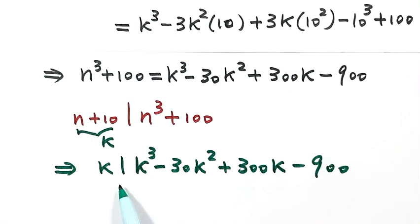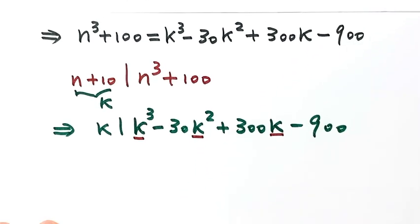Because k divides this whole thing, look at the first three terms. The first three terms each has a k as a factor, so the first three terms are divisible by k. That means 900 is also divisible by k.